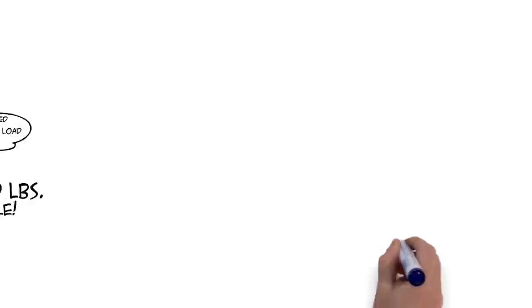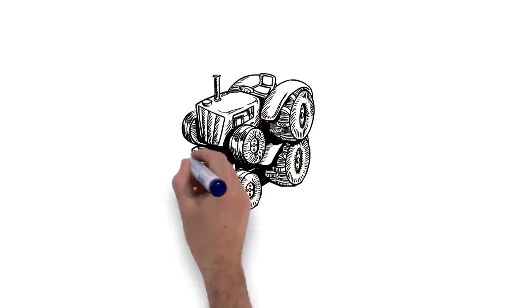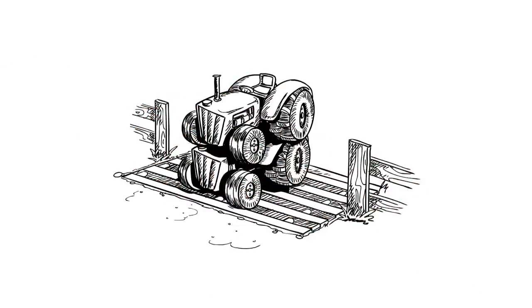And listen here, these here forms, they're engineered with an HS20 load rating, Bob. That there John Deere you got? She can support two of them.